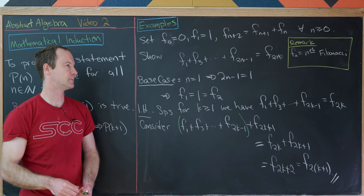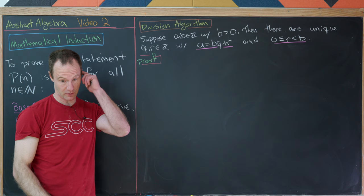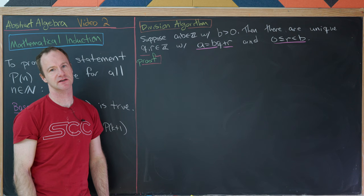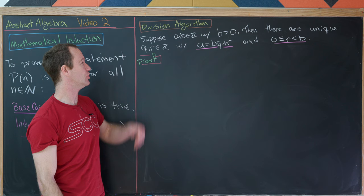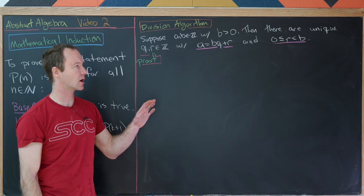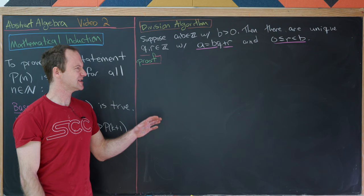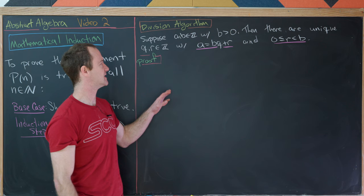Now we're going to look at the division algorithm. Suppose A and B are integers with B positive — so B is a natural number. Then there are unique Q and R such that A = BQ + R, where R is between 0 (inclusive) and B (exclusive). Q is the quotient and R is the remainder — the standard division with remainder you probably learned in elementary school.